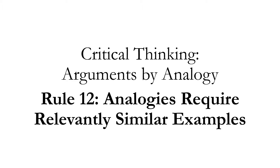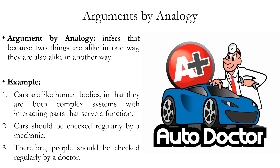Critical Thinking Rule 12: Analogies Require Relevantly Similar Examples. An argument by analogy is one that infers that because two things are alike in one way, they must also be alike in another way. For example: cars are like human bodies in that they are both complex systems with interacting parts that serve a function. Cars should be checked regularly by a mechanic. Therefore, people should be checked regularly by a doctor. The first premise makes a comparison between cars and human bodies, and all arguments by analogy contain this type of comparison as one of their premises.